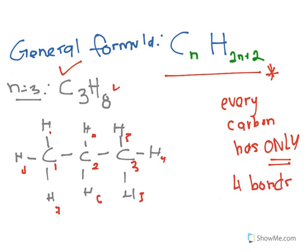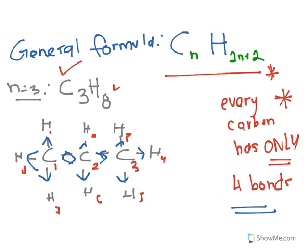So the general formula CnH2n+2 you need to know, and you also need to know that every carbon has only 4 bonds. Each carbon here has 1, 2, 3, 4 bonds — 4 bonds every time. This is something which is true and you really need to know it.